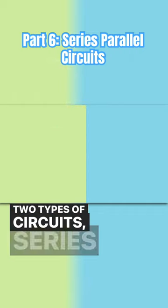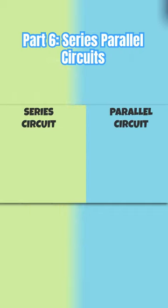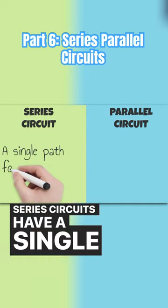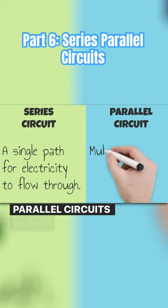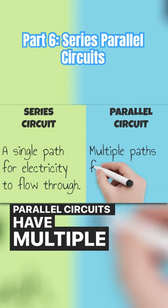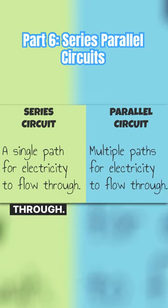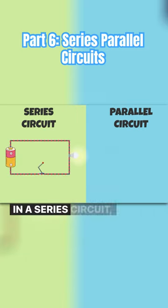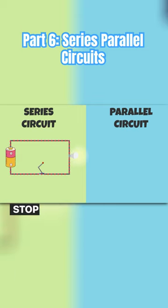There are two types of circuits: series and parallel. Series circuits have a single path for electricity to flow through. Parallel circuits have multiple paths for electricity to flow through.